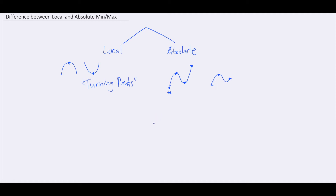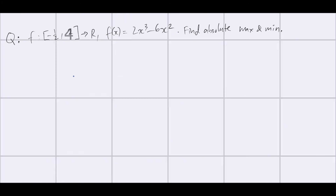Now that you know the theoretical concepts of the differences between local and absolute maximum and minimum, I'd like to apply this concept and see how we can apply it mathematically. Jumping into a question — I've got one simple cubic here, which is generally what you will see for absolute minimum and maximum questions, since these have multiple sets of turning points and end points given as part of the function's domain.